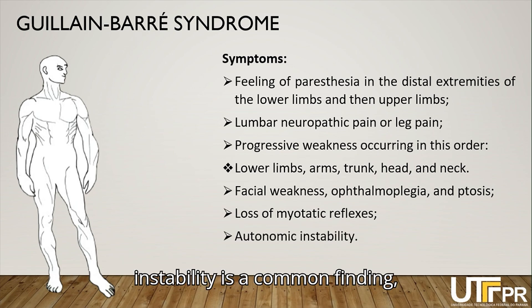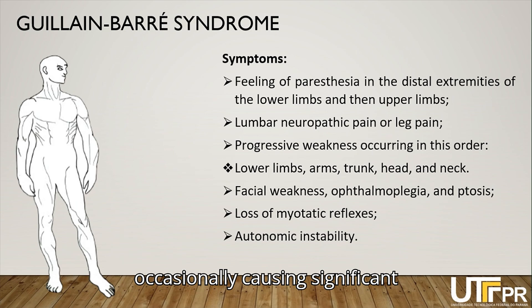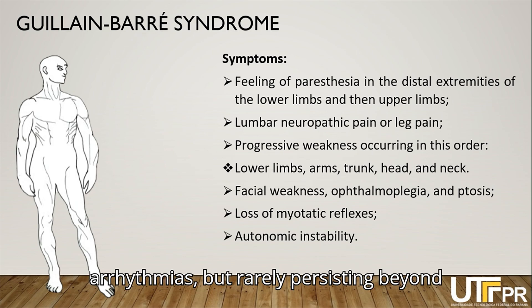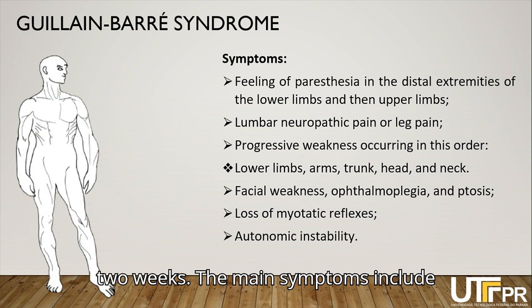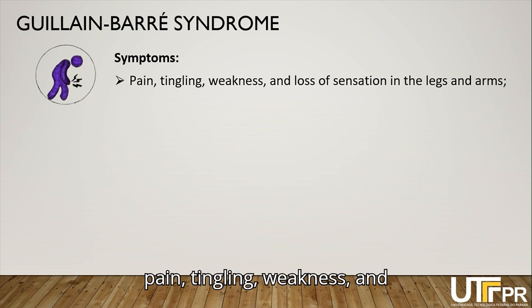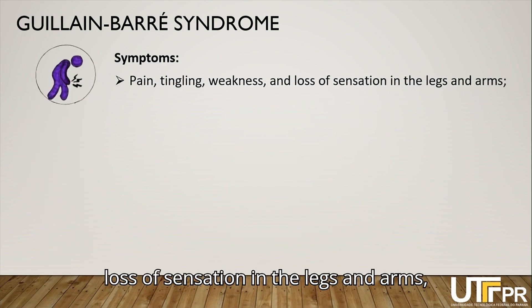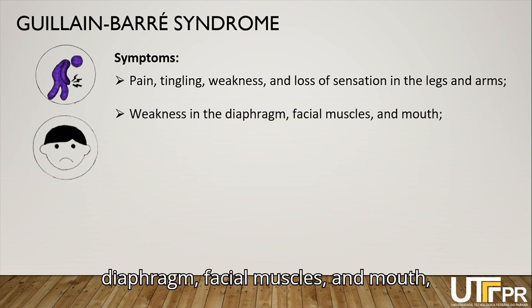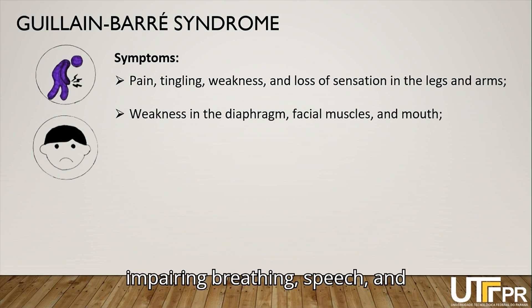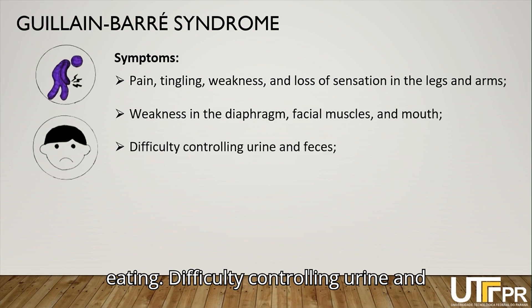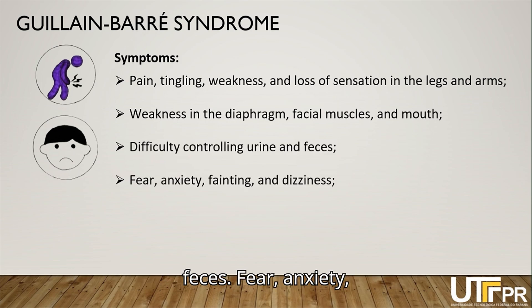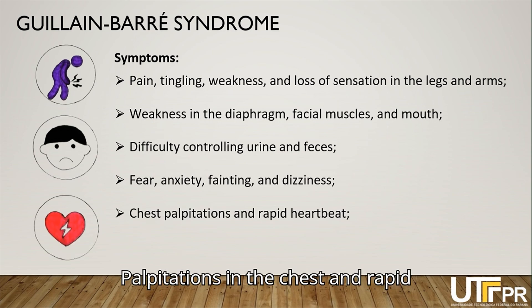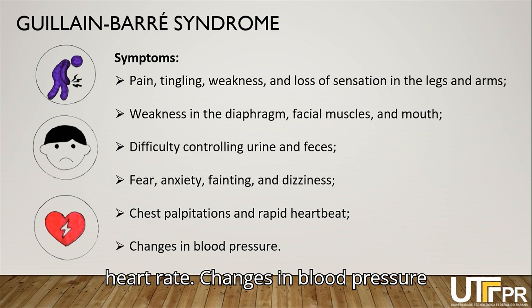Autonomic instability is a common finding, occasionally causing significant arrhythmias, but rarely persisting beyond two weeks. The main symptoms include pain, tingling, weakness, and loss of sensation in the legs and arms, hindering movement; weakness in the diaphragm, facial muscles, and mouth, impairing breathing, speech, and eating; difficulty controlling urine and feces; fear, anxiety, fainting, and dizziness; palpitations and rapid heart rate; and changes in blood pressure.